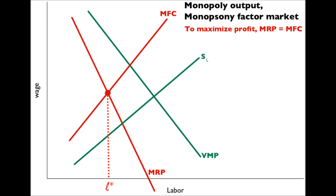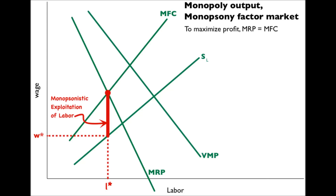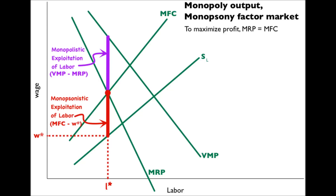L-star workers are willing to provide their labor services for a wage of W-star. This monopoly-monopsony combination is the worst-case scenario for the workers. There is monopsonistic exploitation with the gap between marginal factor cost and wage, and there is monopolistic exploitation with the gap between the value of the marginal product — the market value of the added resource — and the marginal revenue product, the added revenue with the added resource.